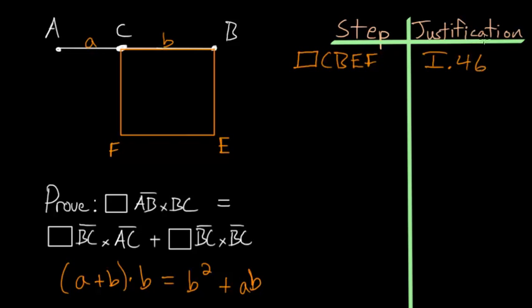And from here, let's construct a line AD that's parallel to the line CF. So we're creating AD parallel to CF, so that'll be right here.